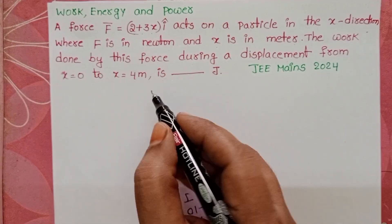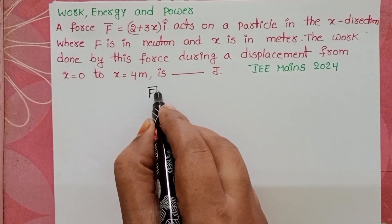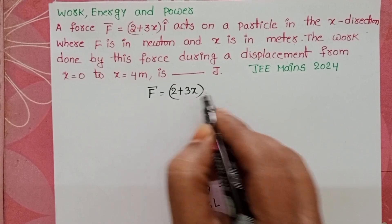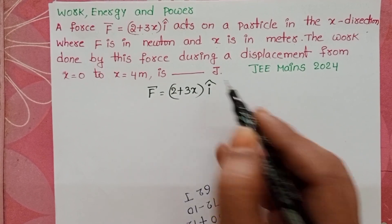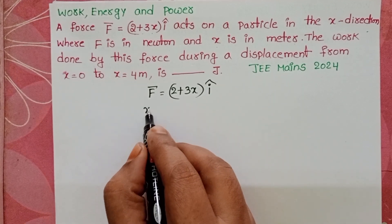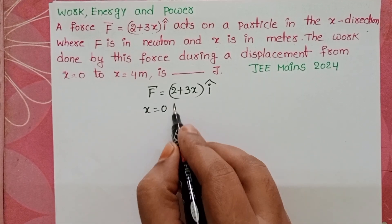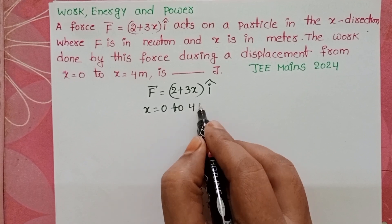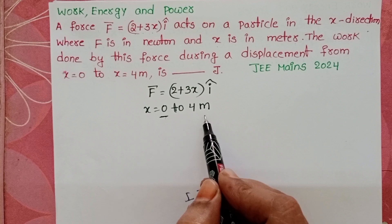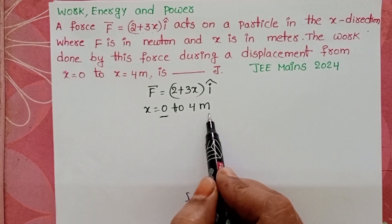In this question, we know force is a function of x. It is acting along the x-direction, that's why the unit vector is î. And we know the limits from 0 to 4 meters. Displacement is along the x-direction, and the initial value of displacement is 0 and the final limit is 4 meters.